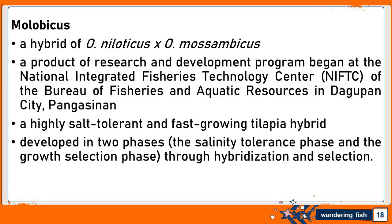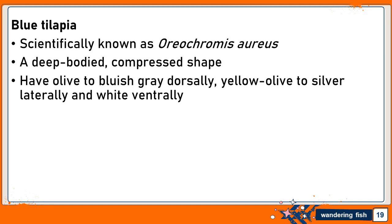Malobicus is a hybrid of Oreochromis niloticus and Oreochromis mossambicus. It is a product of a research and development program which began at the National Integrated Fisheries Technology Center of the Bureau of Fisheries and Aquatic Resources in Dagupan City, Pangasinan. Malobicus is a highly salt-tolerant and fast-growing tilapia hybrid, developed through hybridization and selection in two phases: the salinity tolerance phase and the growth selection phase. Blue Tilapia, scientifically known as Oreochromis aureus, is deep-bodied and compressed, with olive to bluish-gray coloration dorsally, yellow-olive to silver laterally, and white ventrally.